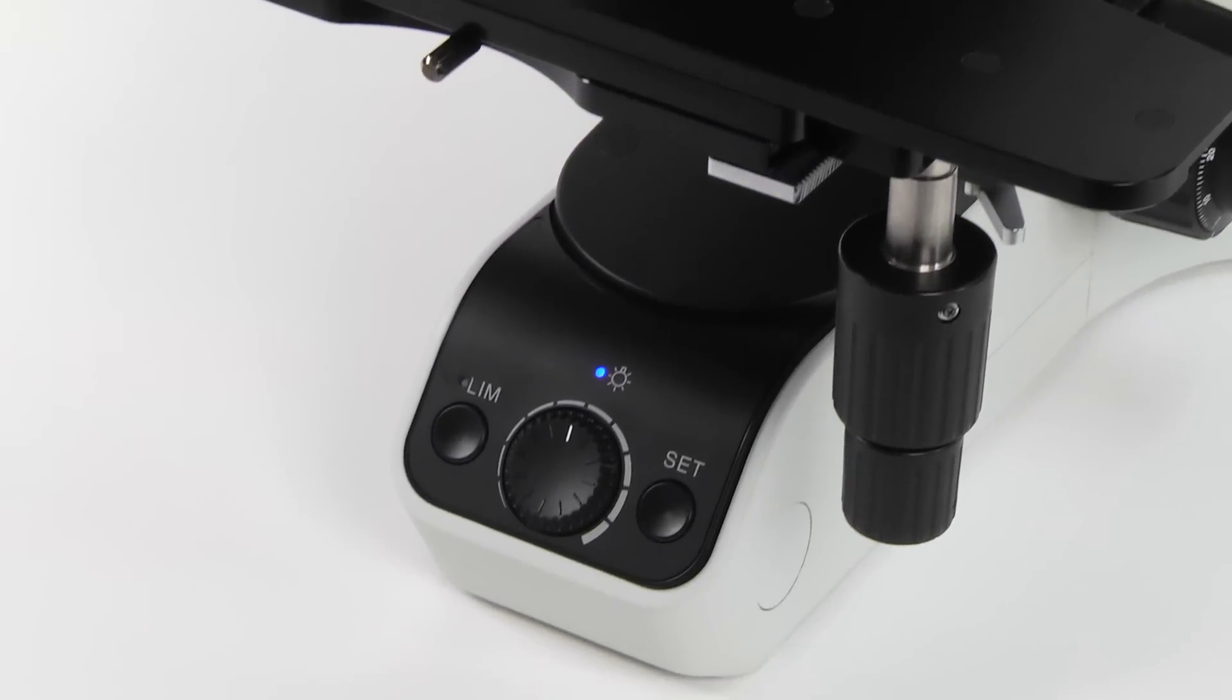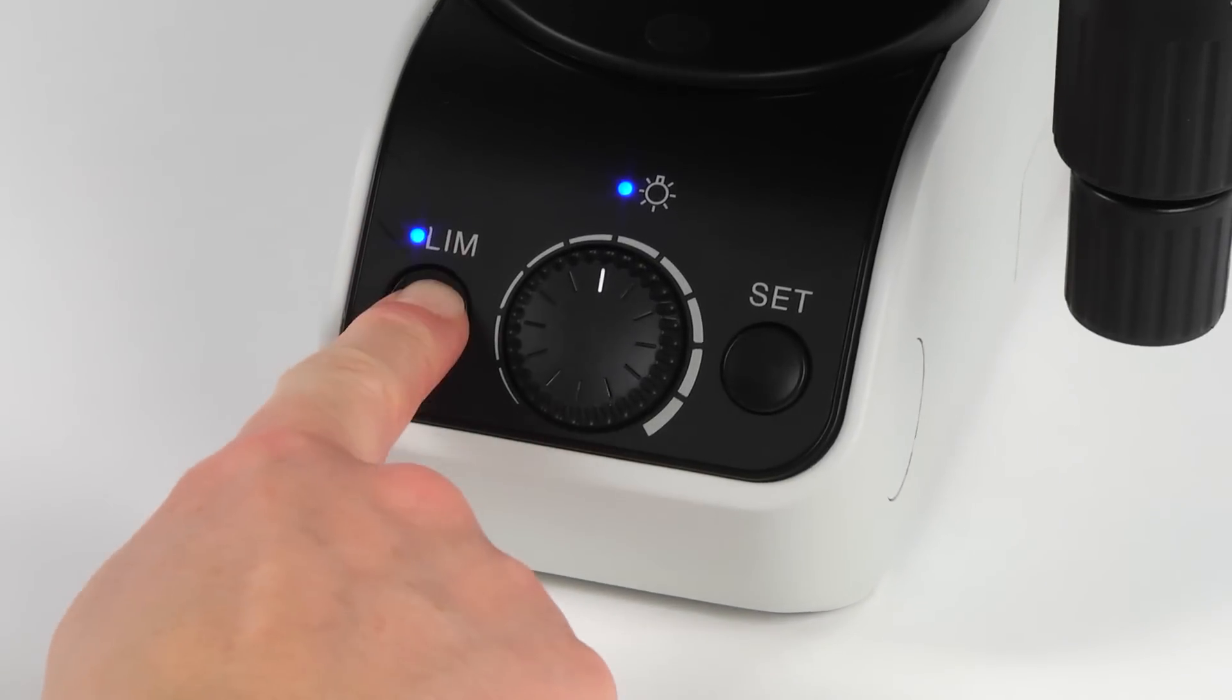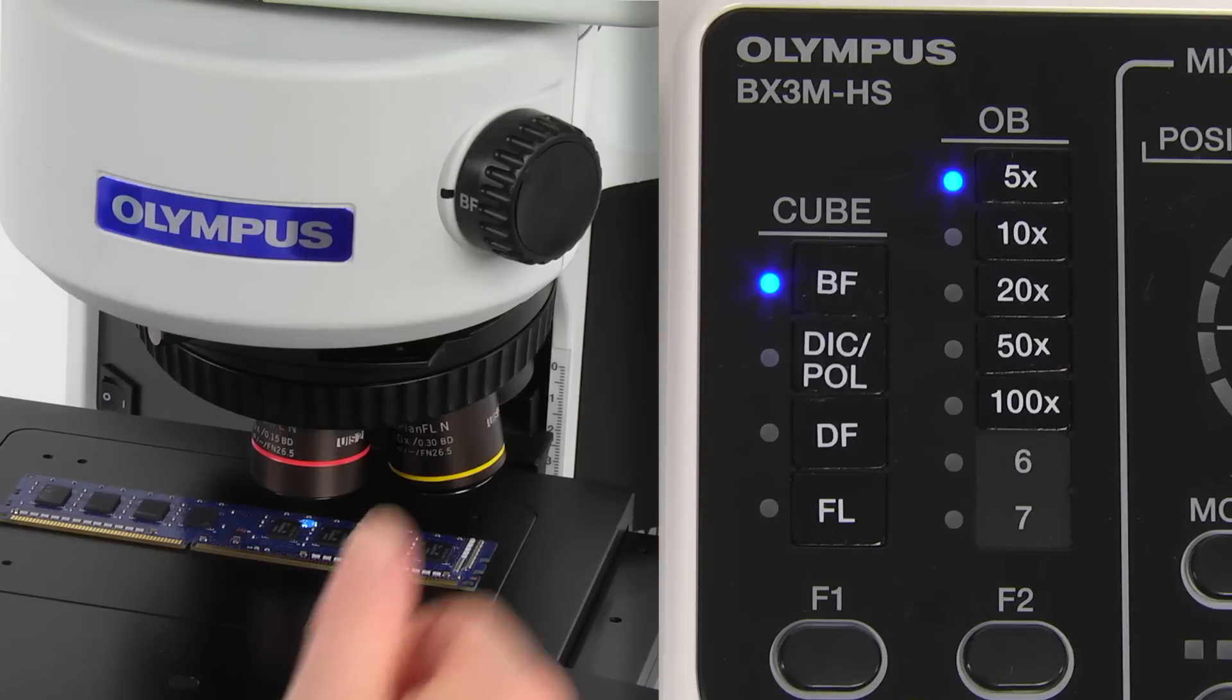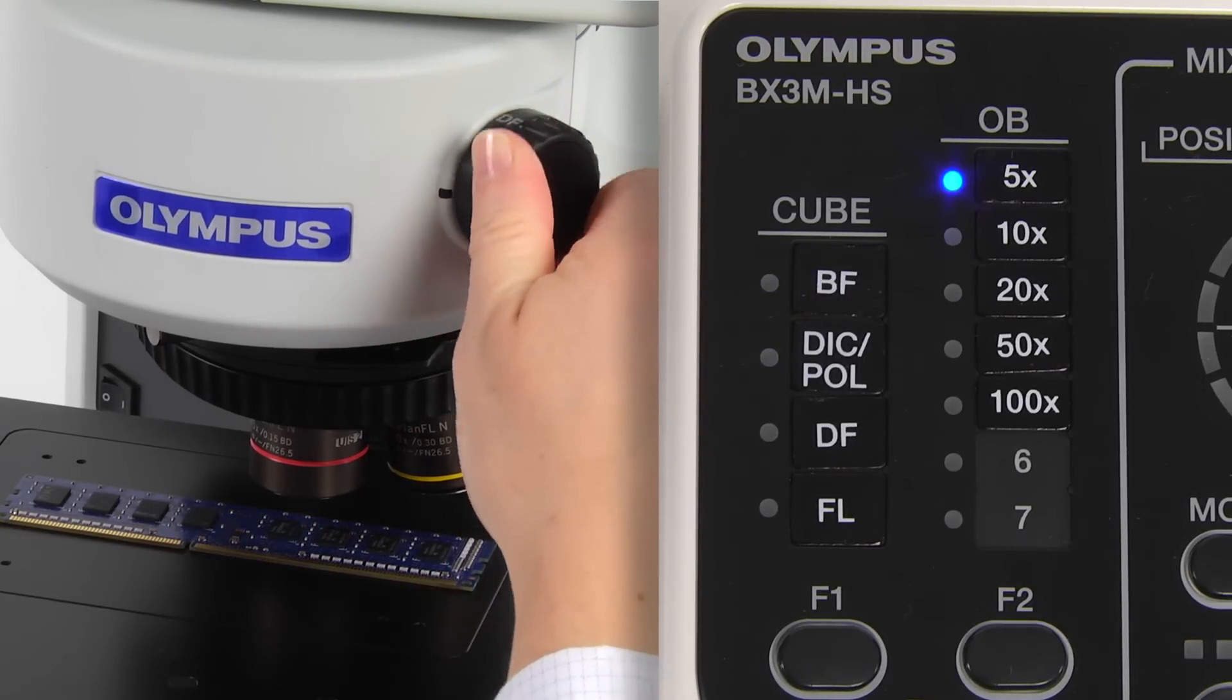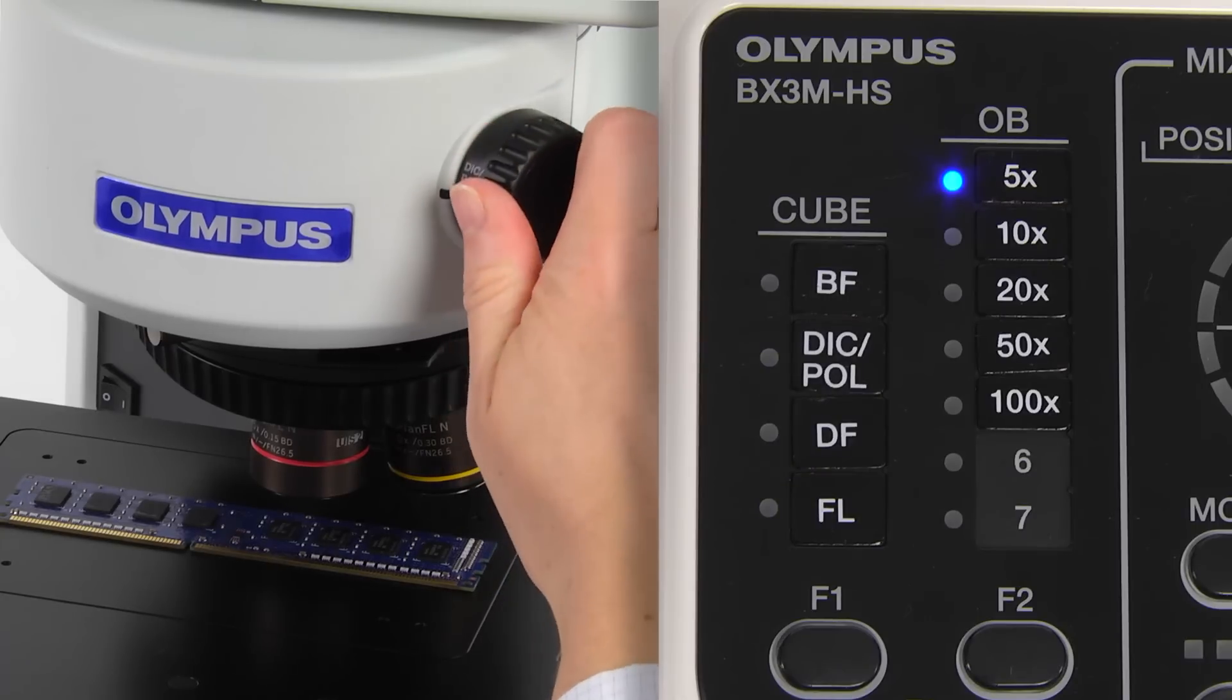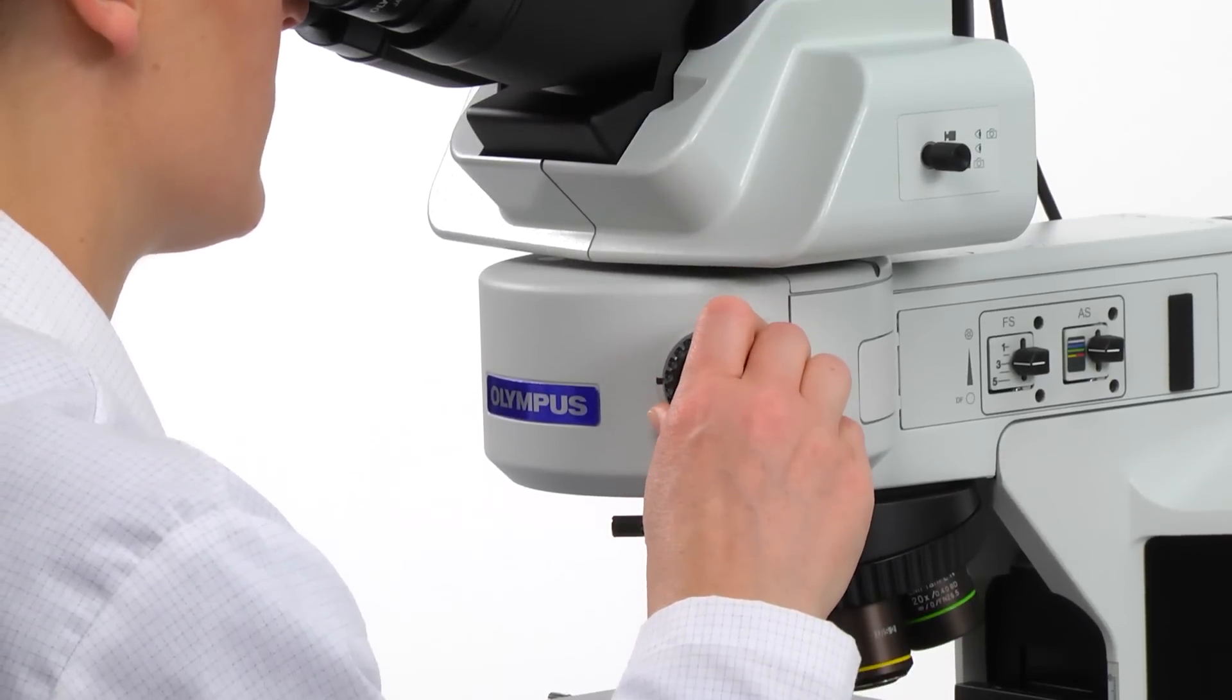For traditional observation methods, setting the illumination intensity with LightManager saves time and minimizes operator training. LightManager works with coded hardware by adjusting the illumination intensity to preset values when the magnification and observation method are changed. This takes the guesswork out of optimizing the lighting.